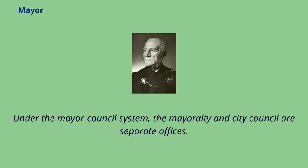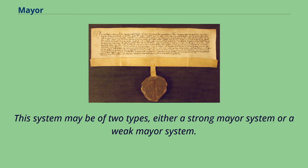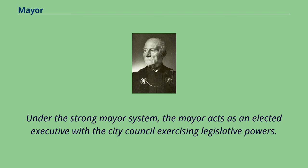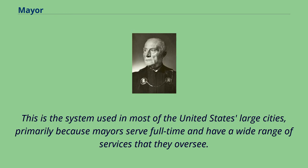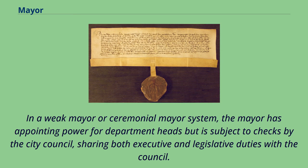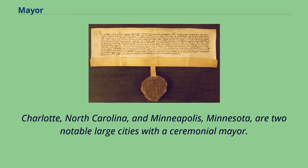Under the mayor-council system, the mayoralty and city council are separate offices. This system may be of two types: a strong mayor system or a weak mayor system. Under the strong mayor system, the mayor acts as an elected executive with the city council exercising legislative powers, and they may select a chief administrative officer to oversee the different departments. This is the system used in most large U.S. cities, primarily because mayors serve full-time and oversee a wide range of services. In a weak or ceremonial mayor system, the mayor has appointing power for department heads but is subject to checks by the city council, sharing both executive and legislative duties. This is common for smaller cities, especially in New England. Charlotte, North Carolina and Minneapolis, Minnesota are two notable large cities with a ceremonial mayor.